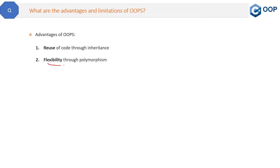The second advantage is flexibility through polymorphism. For example, same-name methods can do different things. This is the flexibility that overloading provides — you are free to choose the best overloaded method version as per your need. That is the flexibility provided by polymorphism.